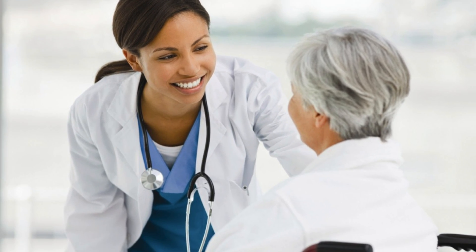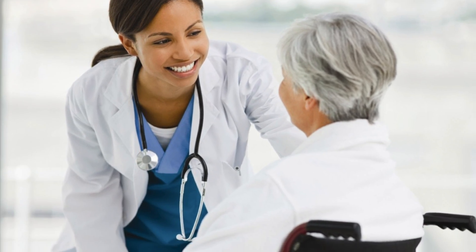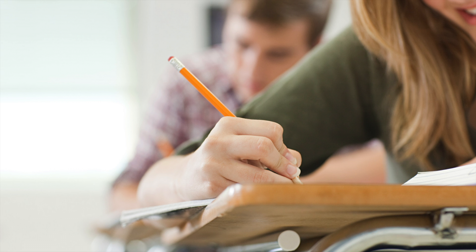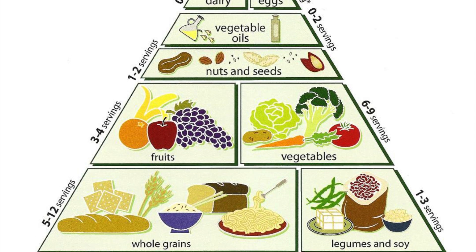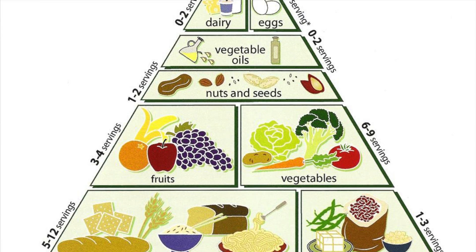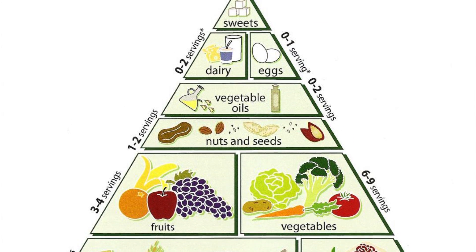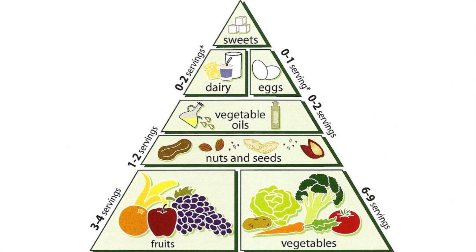Social development indicators are used to assess how well a country is developing in key areas such as health, education and diet. There are hundreds of social development indicators, but we are going to look at four.